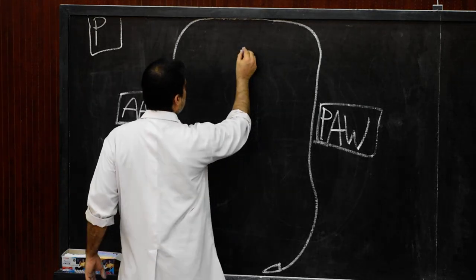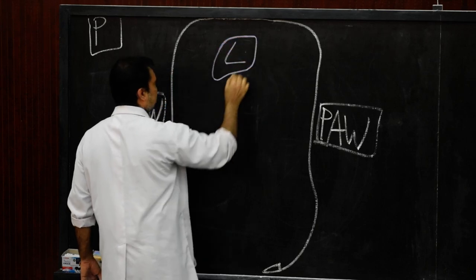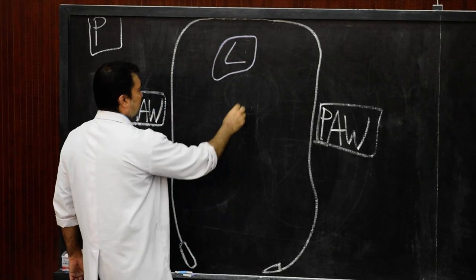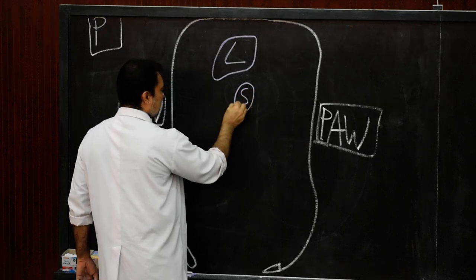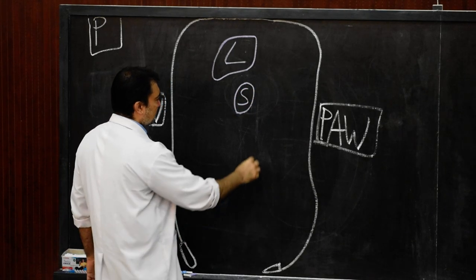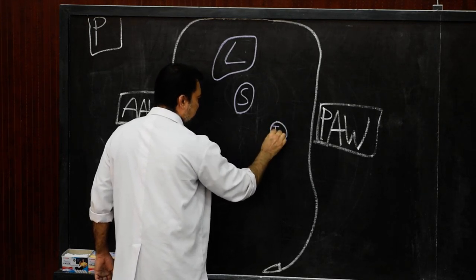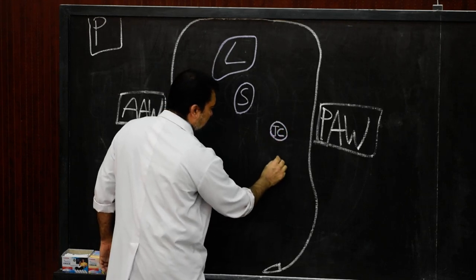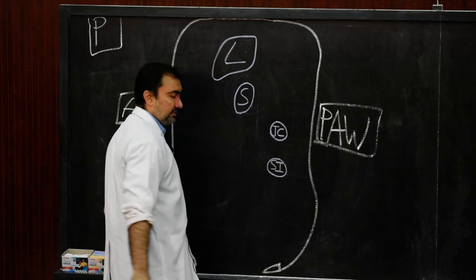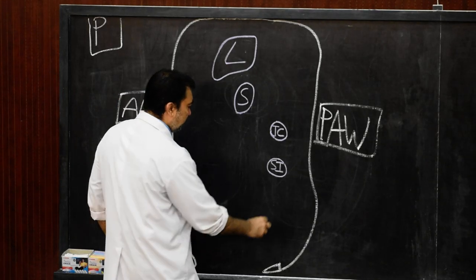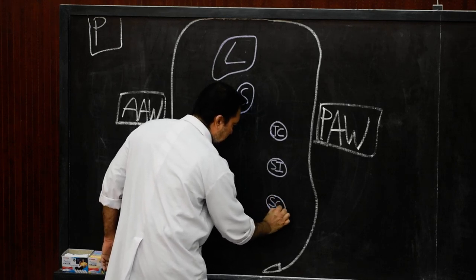We are going to draw the various viscera within the abdominal cavity. This is a general diagram, very important to clear the fundamentals of the peritoneum. First, we are going to show the liver — remember, this is the sagittal section. After drawing the liver, we are going to draw the stomach. Then we are going to draw the transverse colon. Just below that, we draw the small intestine — the coils of jejunum and ileum, sagittal section.